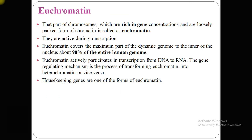Euchromatin is the part of the chromosome which is rich in gene concentration and loosely packed. It covers the maximum part of the genome — around 90% of the human genome. Housekeeping genes are one form of euchromatin. Euchromatin actively participates in transcription, while heterochromatin is transcriptionally inactive. Gene regulation involves the process of transforming euchromatin to heterochromatin or heterochromatin back to euchromatin.